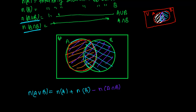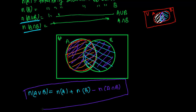I got this complete region, which means: n(A∪B) = n(A) + n(B) − n(A∩B). So the cardinal number of A union B is the cardinal number of A plus the cardinal number of B minus the cardinal number of A intersection B.